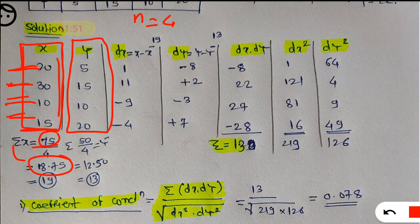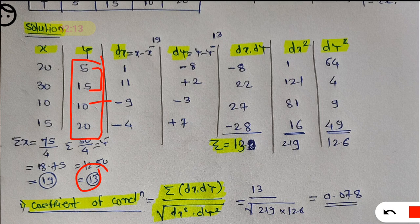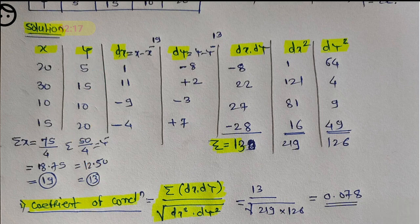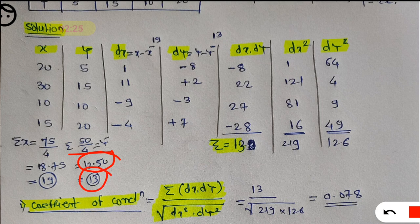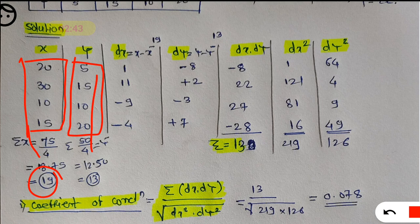For ease of calculation, instead of 18.75 I can take a round figure value — I'll take 19. For ȳ, summation of y is 5 plus 15 plus 30, giving 50. 50 divided by 4 gives 12.5. But for ease of calculation, I am taking ȳ as 13. You can take round figure values — no problem. So x̄ is taken as 19 and ȳ is taken as 13.